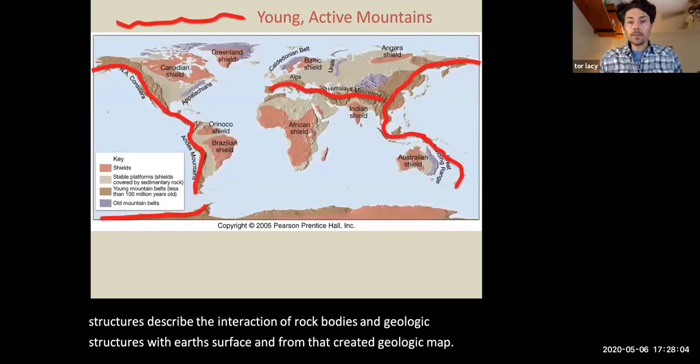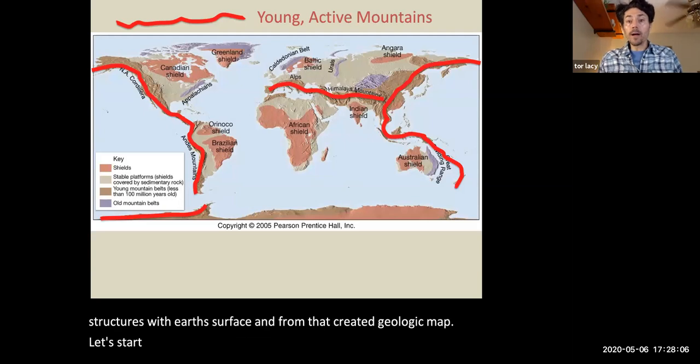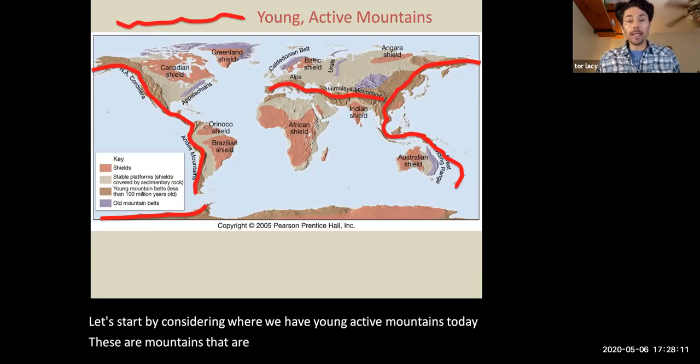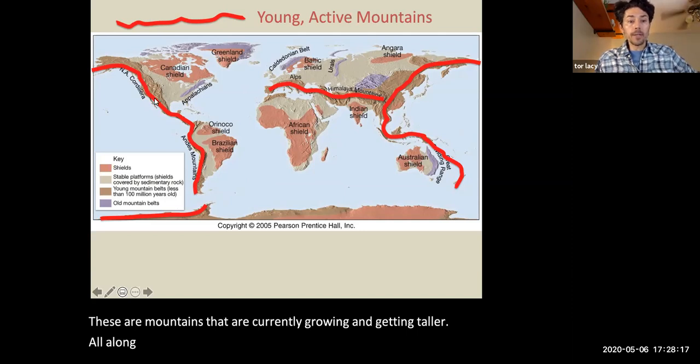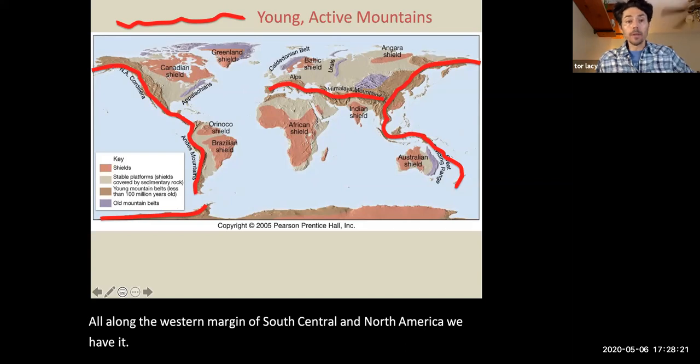Let's start by considering where we have young active mountains today. These are mountains that are currently growing and getting taller. All along the western margin of South, Central, and North America we have young mountains that are currently growing.